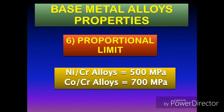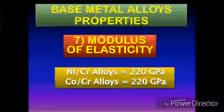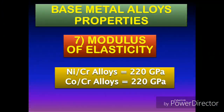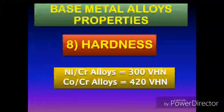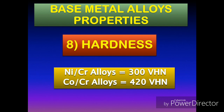Talking about the modulus of elasticity, which determines the stiffness of a material, both nickel-chromium and cobalt-chromium have equal values. Lastly, comparing hardness — the property of a material to resist indentation — the Vickers hardness number for nickel-chromium casting alloy is 300, whereas the Vickers hardness number for cobalt-chromium casting alloy is 420.